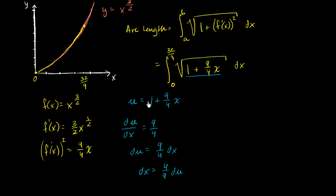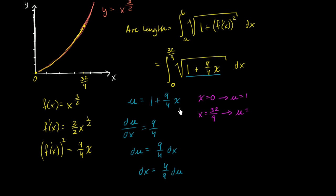We also have to change the bounds of integration. When x equals zero, u equals one plus nine fourths times zero, so u equals one. When x equals 32 over nine — and this is why that number was picked — 32 over nine times nine fourths equals 32 over four, which is eight, plus one equals nine. That worked out very nicely.